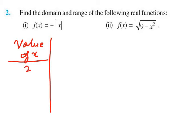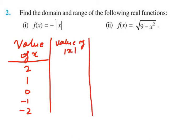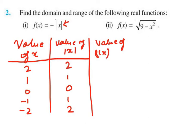Now let us take some positive and some negative values of x. We need to find the value of mod x for each: mod 2 is 2, mod 1 is 1, mod 0 is 0, mod of minus 1 is 1, mod of minus 2 is 2. Now we need to find the value of f(x), which is minus mod x.